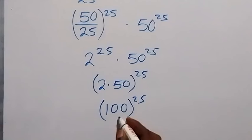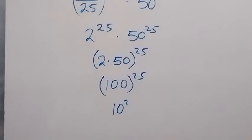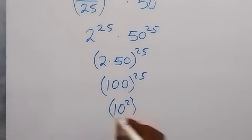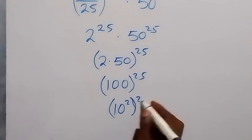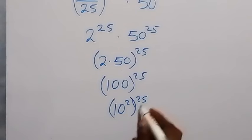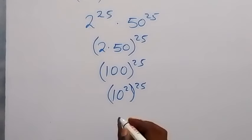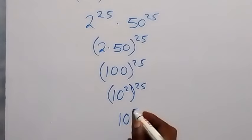And from here, we can still write 100 as 10 squared raised to power 25. And since this power is 25, that would be 50, so we can write this as 10 raised to power 50.